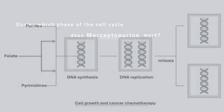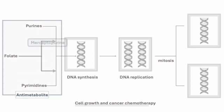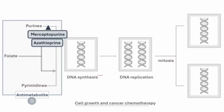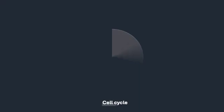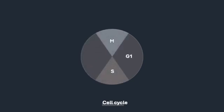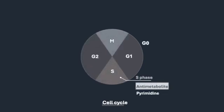During which phase of the cell cycle does mercaptopurine work? Mercaptopurine is an antimetabolite and a purine analog. Mercaptopurine inhibits DNA synthesis and works during the S phase of the cell cycle.